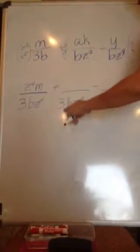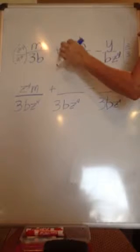To get from bz cubed to 3bz to the fourth, we have to multiply by 3z, both the numerator and the denominator.